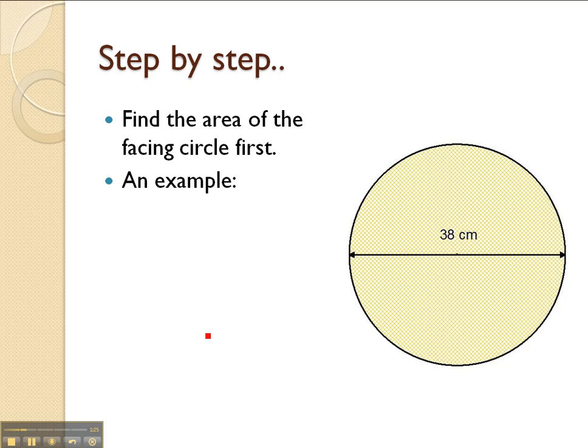Let's do a step-by-step example to work out the volume of a cylinder. Let's say that we had a cylinder with a face that looked like this. It had a diameter of 38 centimetres. The equation for area of a circle needs radius. Radius is equal to the diameter divided by 2. So in this case the radius would be 38 divided by 2, which is equal to 19.